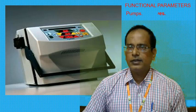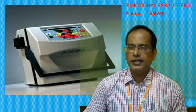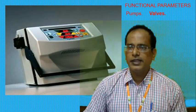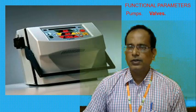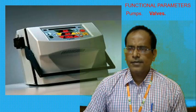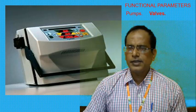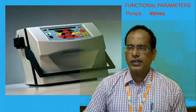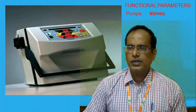The second functional parameter is valves. Several valves with electronic actuation are needed in the machine to allow variable mixing ratios. Various implementations are possible, from simple open-or-closed valves driven by solenoids to precision variable-position valves driven by stepper motors or other means.